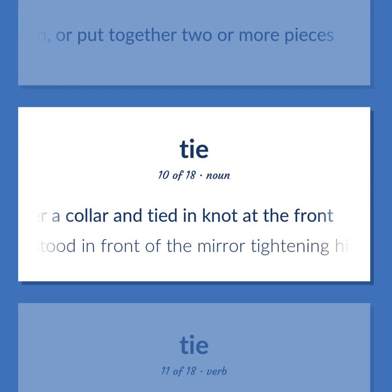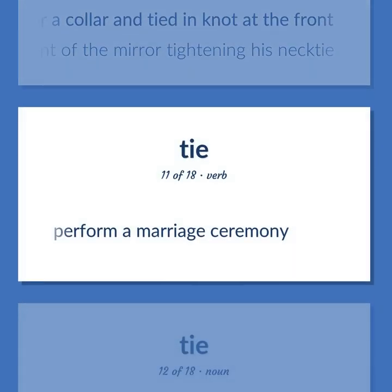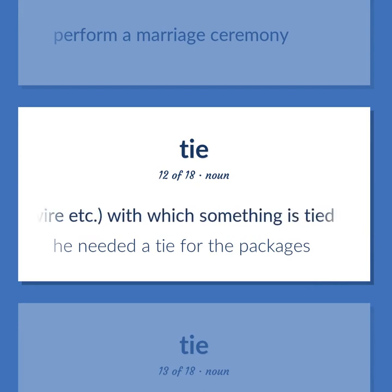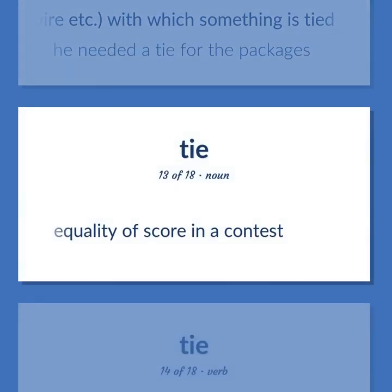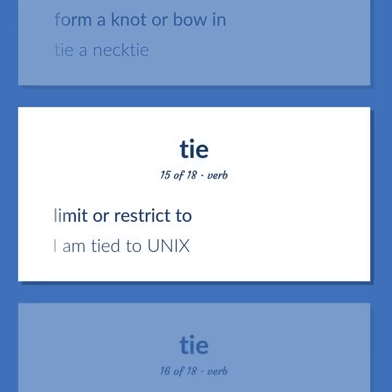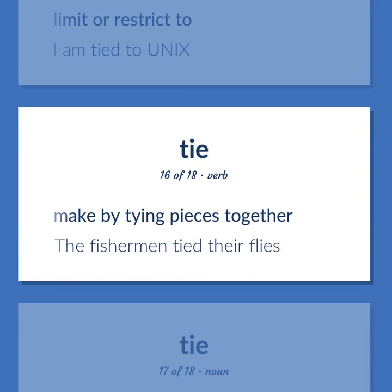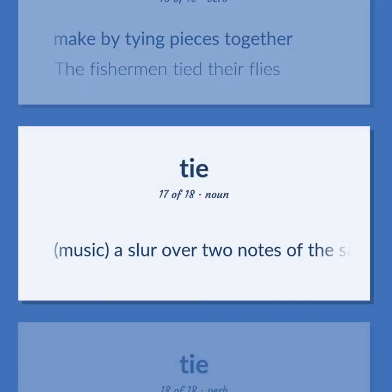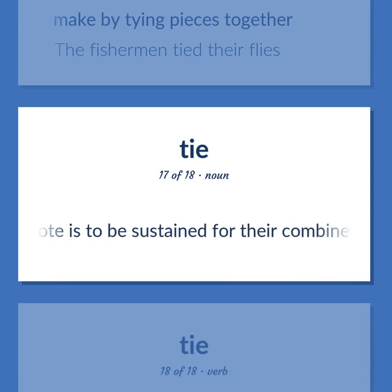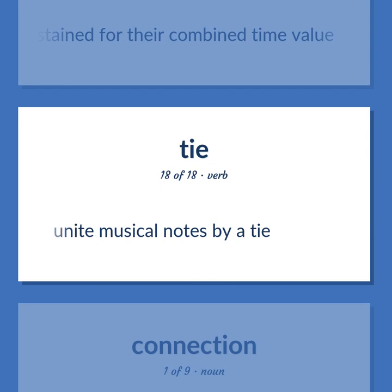Tie: He stood in front of the mirror tightening his necktie. Perform a marriage ceremony. A cord, string, ribbon, or wire with which something is tied — he needed a tie for the packages. Equality of score in a contest. Form a knot or bow in — tie a necktie. Limit or restrict to — I am tied to Unix. Make by tying pieces together — the fishermen tied their flies. Music: a slur over two notes of the same pitch, indicating that the note is to be sustained for their combined time value. Unite musical notes by a tie.